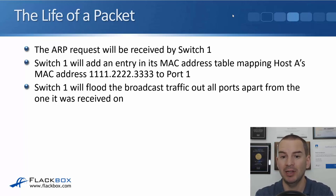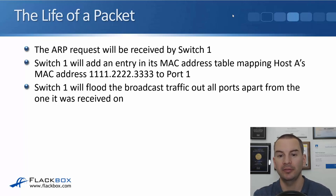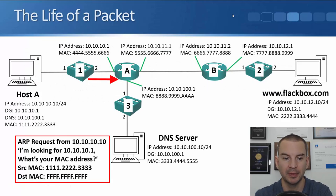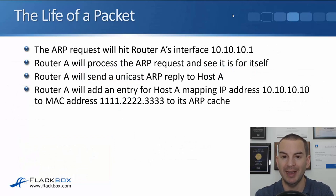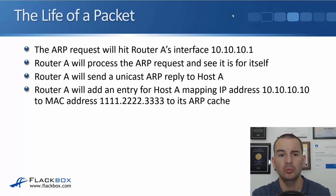Switch1 adds an entry in its MAC address table mapping Host A's MAC address 1.2.3 to port 1. Switch1 then floods that broadcast traffic out all ports apart from the one it was received on — so it goes out port 2. The ARP request is still from 10.10.10.10 looking for 10.10.10.1, source MAC 1.2.3, destination MAC f.f.f. It hits Router A's interface at 10.10.10.1, and Router A processes the ARP request and sees that it is for itself.